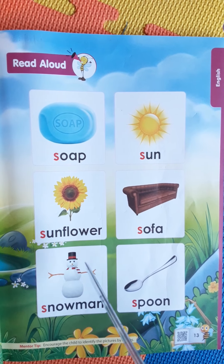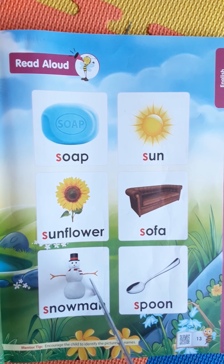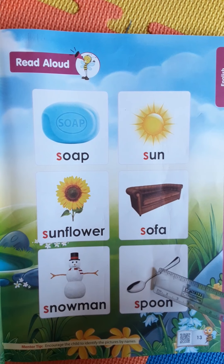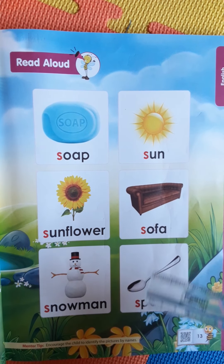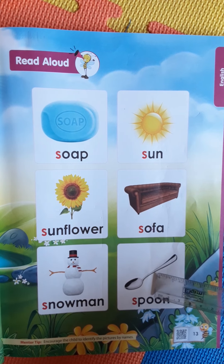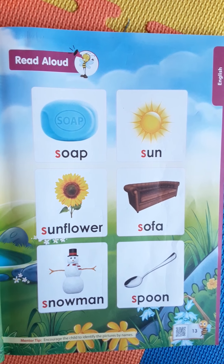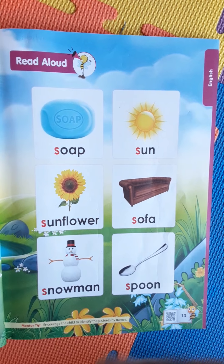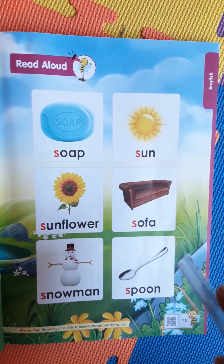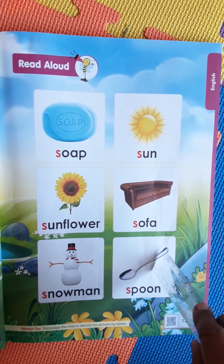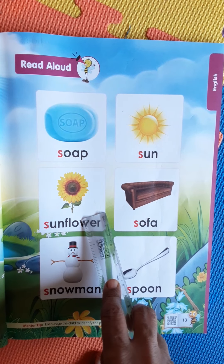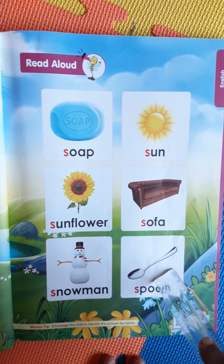S for snowman. When you learn the poem you know — 'I am a little snowman, short and fat' — this is a snowman. And S for spoon. How do you have your lunch or breakfast when you need a spoon? You use the spoon to eat, you do not have to use your hands. When you come to school and bring your tiffin, you should always carry a spoon and a napkin. So: S for soap, S for sun, S for sunflower, S for sofa, S for snowman, S for spoon.